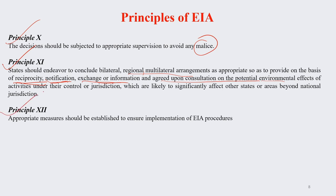The last principle, number 12: appropriate measures should be established to ensure implementation of EIA procedures. We have all those things on paper, but unless this is implemented in a stringent manner, then the purpose of having these principles, rules, and regulation system has no meaning.